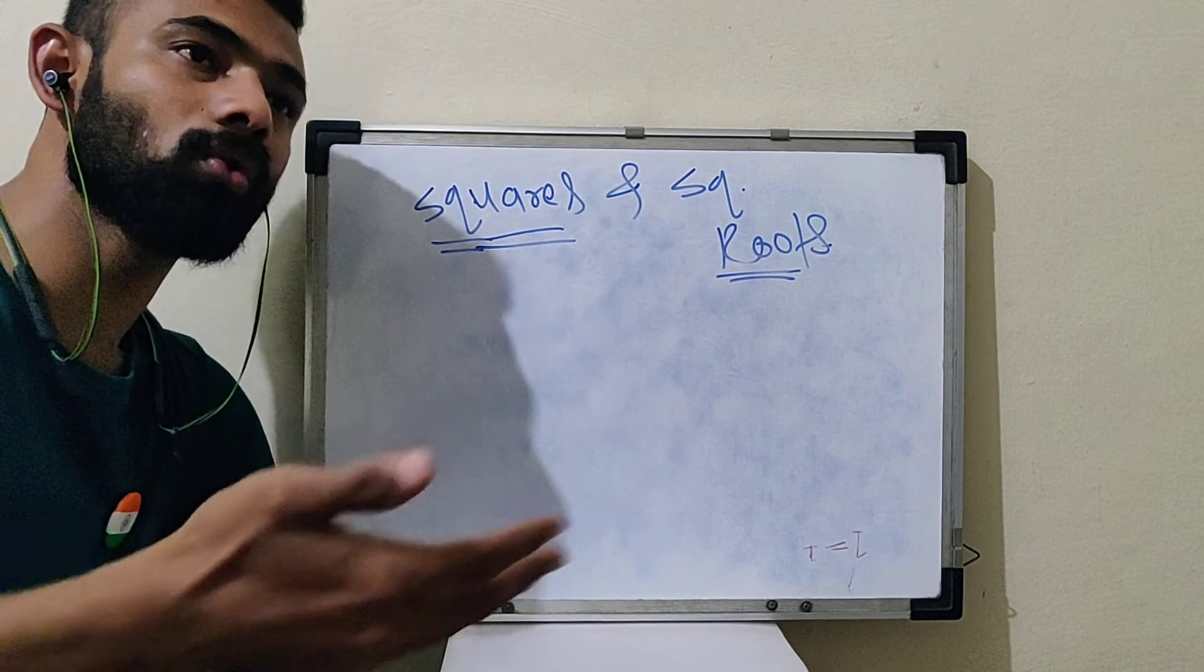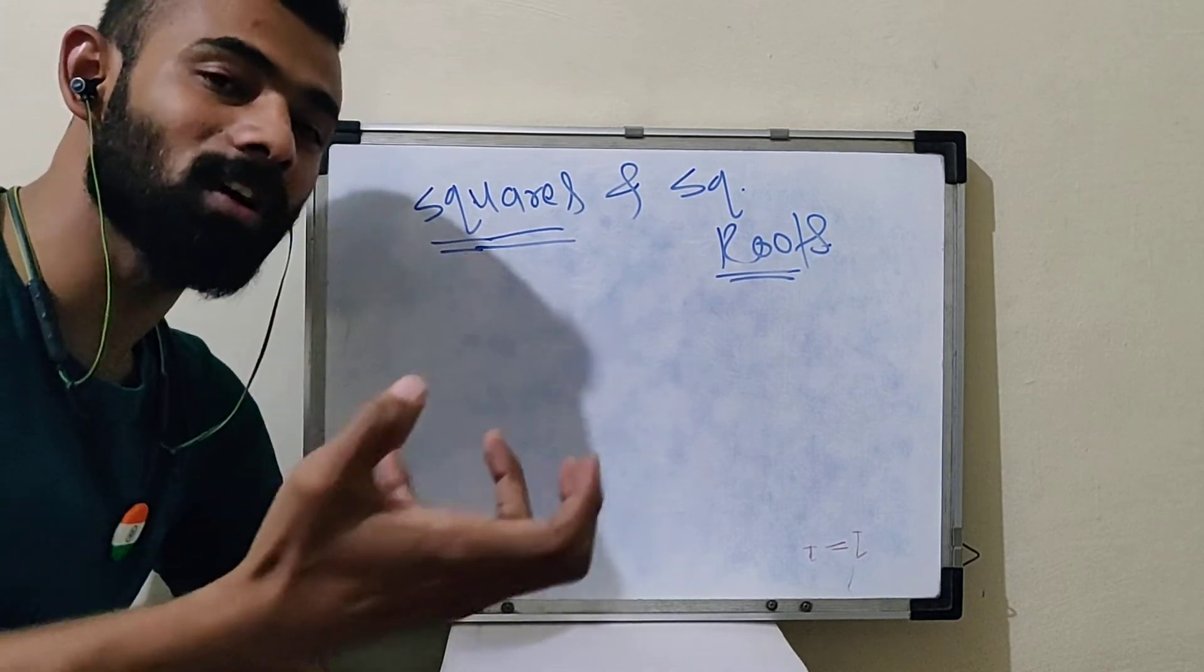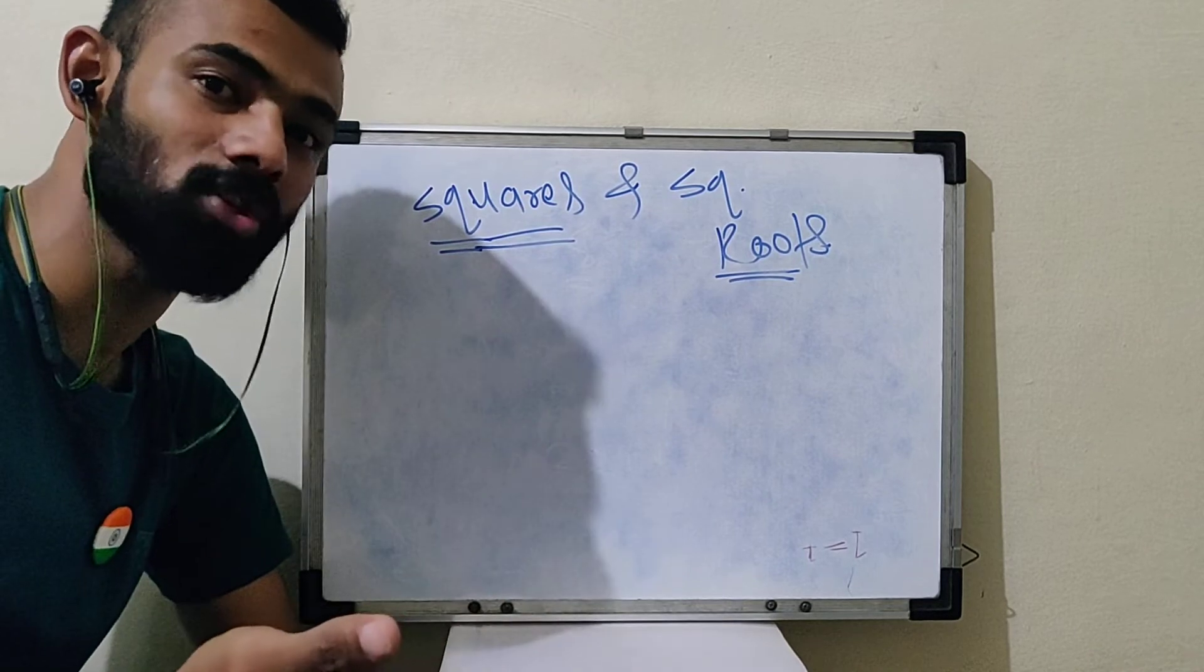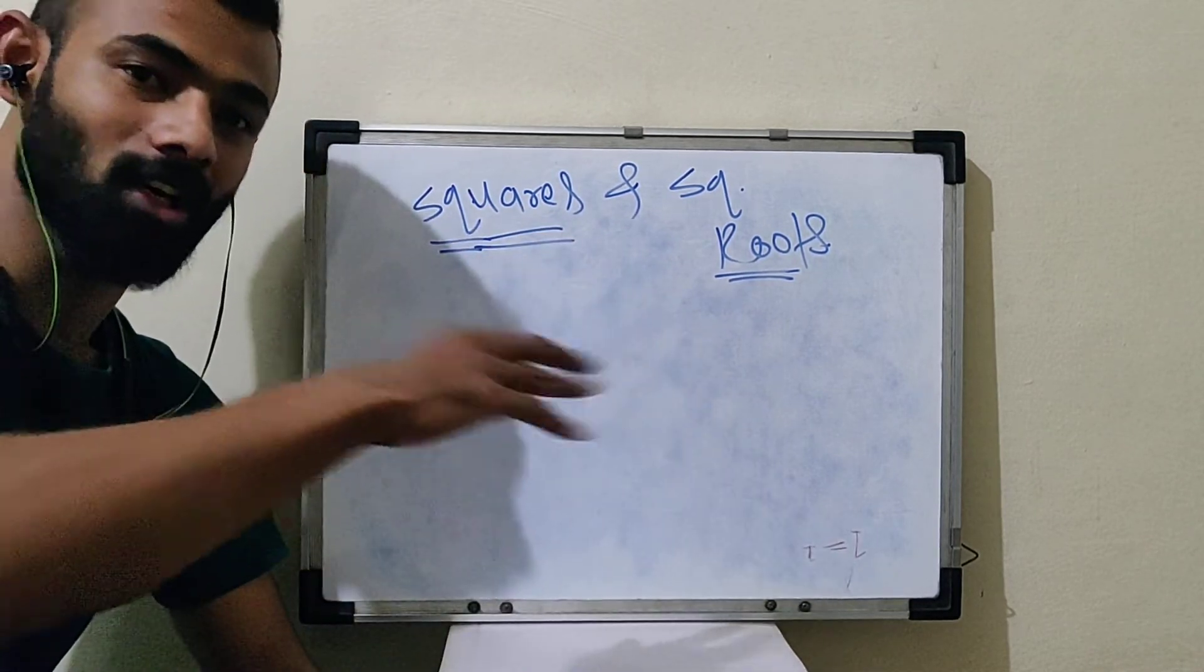And you should know there are squares and square roots. What are the different methods? We will see all these.